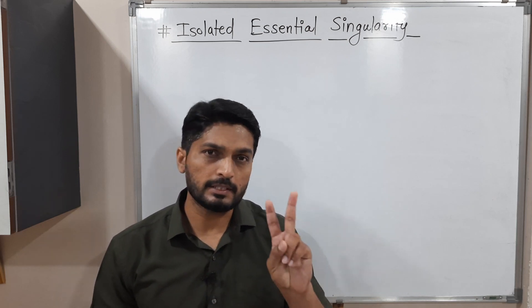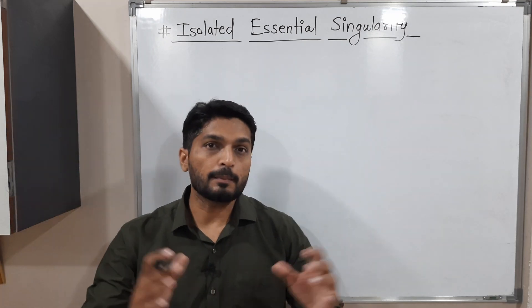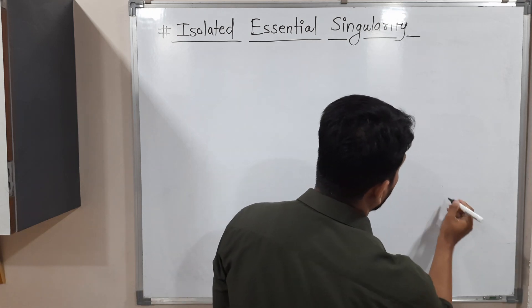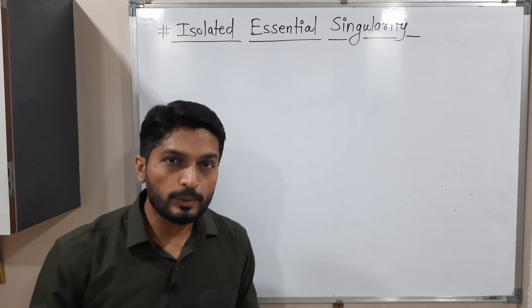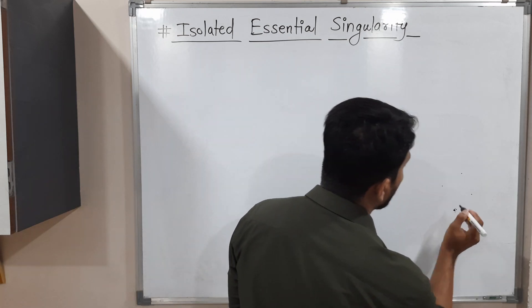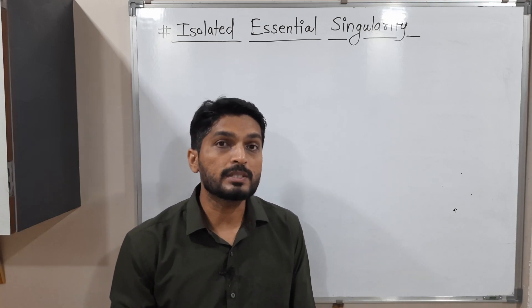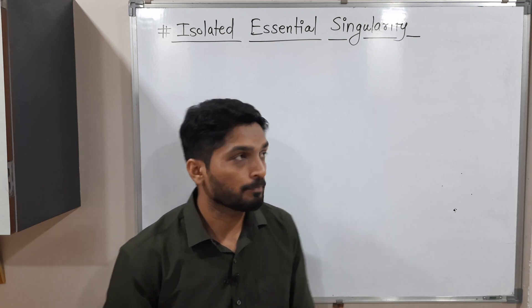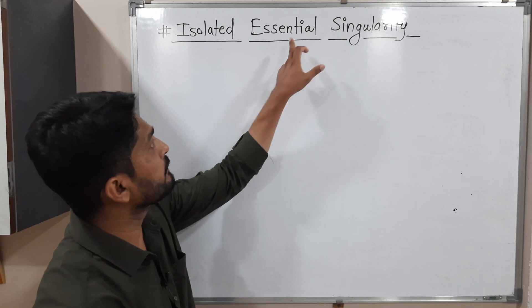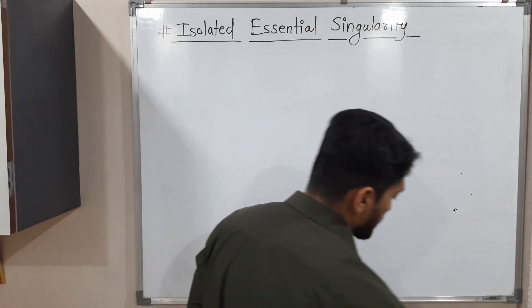We have already seen this in our second video. Next, isolated means separate — if singular points are away from each other we call them isolated singularity. Non-isolated means the singular points are very close to each other and we cannot make them separate, so those are non-isolated singularity. Here we are discussing one type of isolated singularity which is isolated essential singularity.